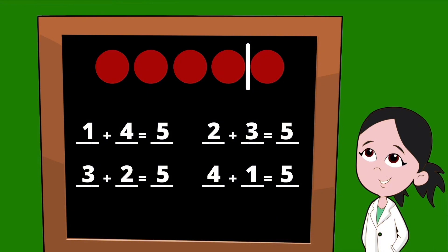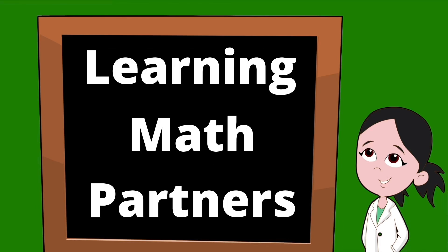There you have it. All four partners for the number five: one and four, two and three, three and two, four and one. These are all the partners of the number five. Thanks so much for joining us.